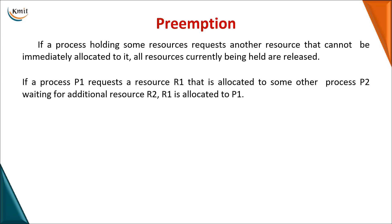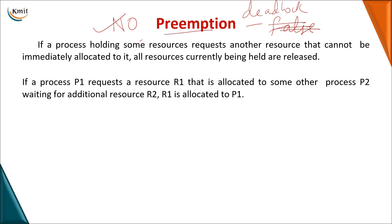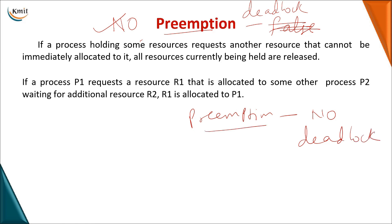The third condition is no preemption — having no preemption leads to a deadlock. So here we want preemption; when there is preemption, there is no deadlock. If a process is holding resource R1 and requesting R2, and R2 cannot be immediately allocated, the process must release all currently held resources immediately and then request the new one.